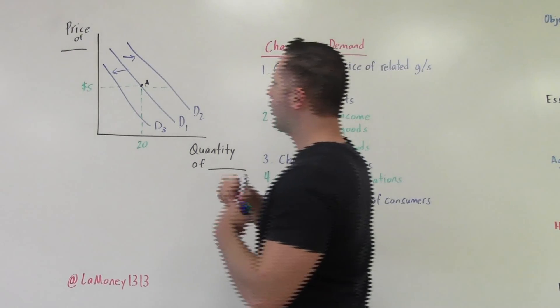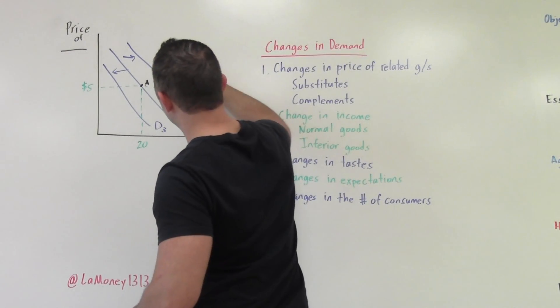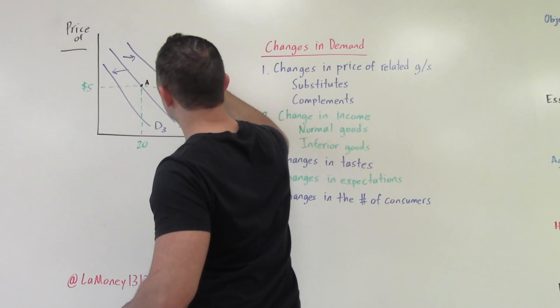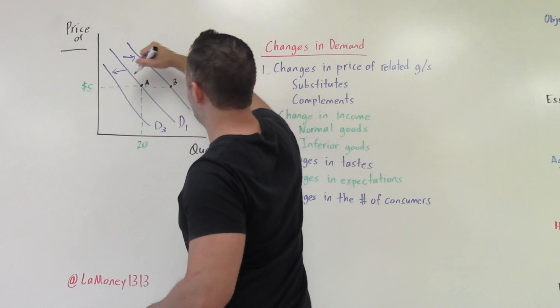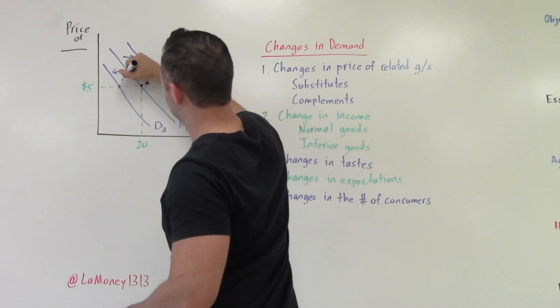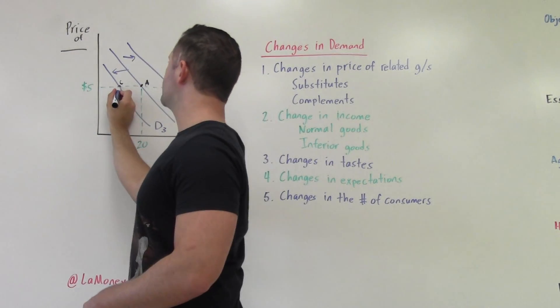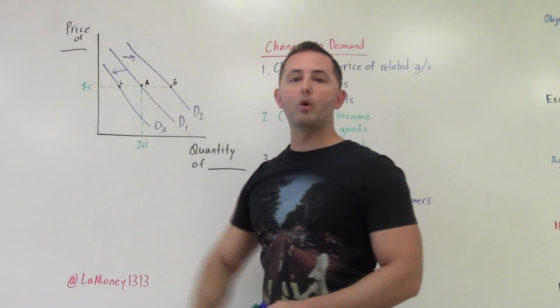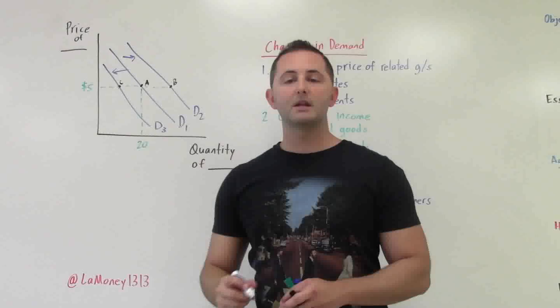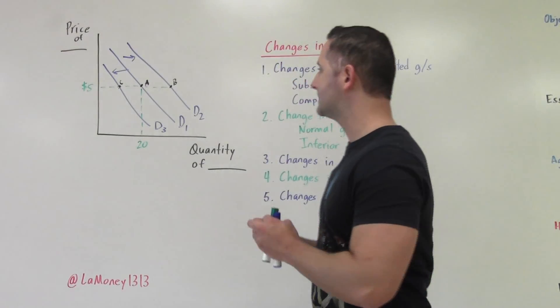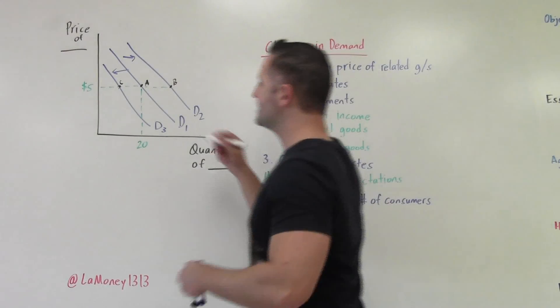Okay. Our price was $5 at point A at D1. Our price is still $5 at point B. And our price is $5 at point C. So the price has not changed. The price has been constant. It has stayed at $5.